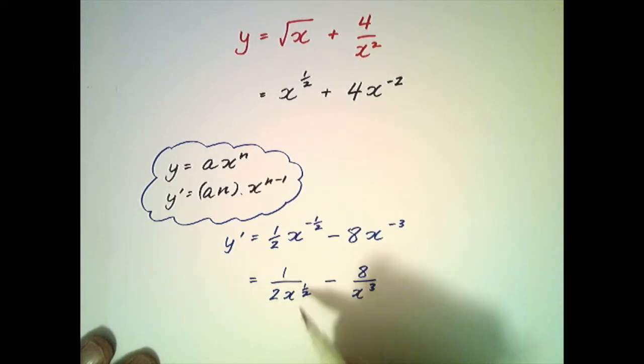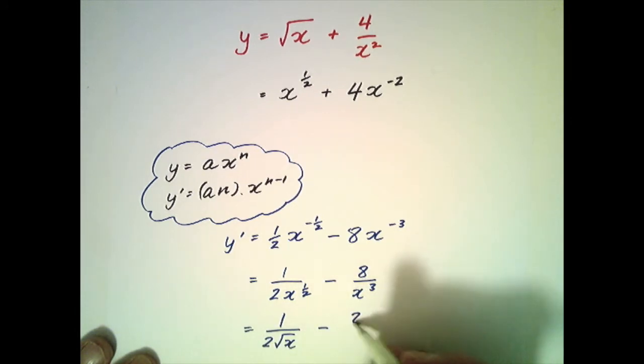Any fractional index is probably better written as a square root, but quite often the questions won't insist on that, but what we'll do here to tidy it up is we'll make that 1 over 2 root x minus 8 all over x to the power 3.